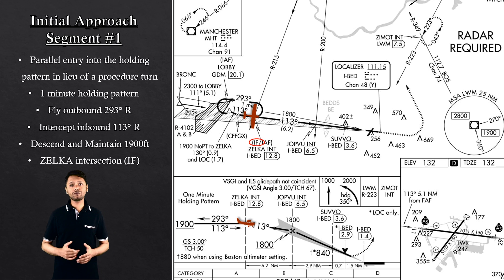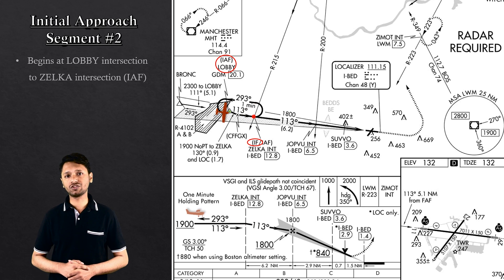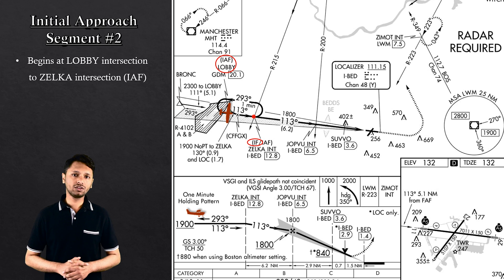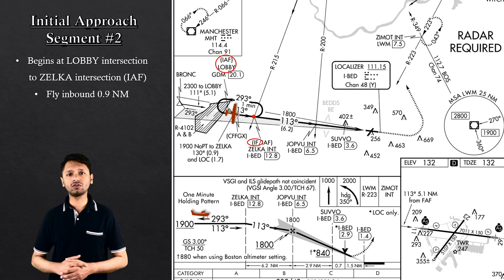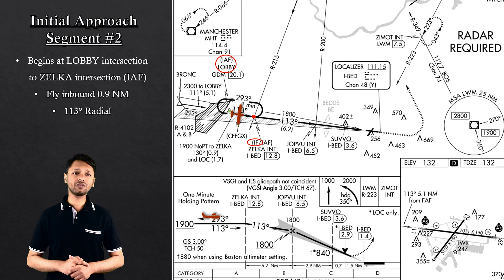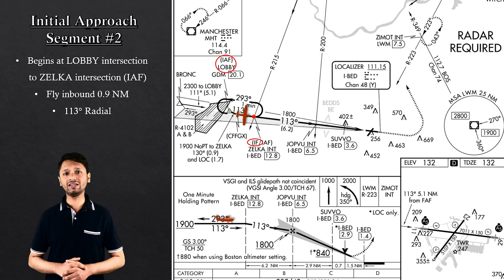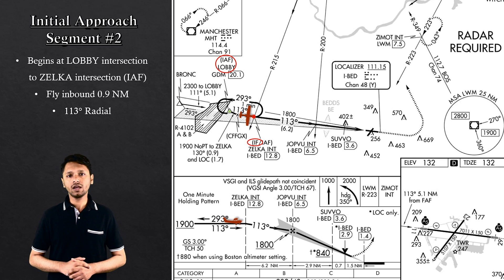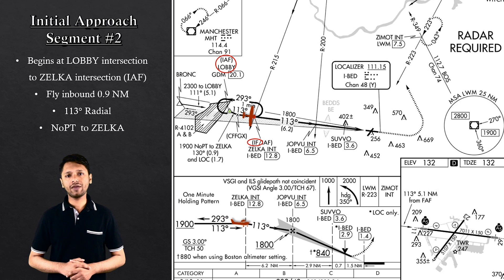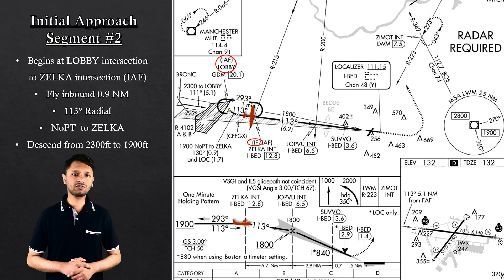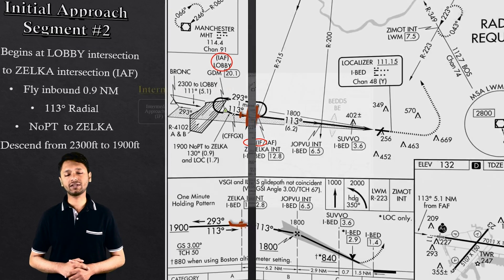Another option for the initial segment is to begin at Lobby intersection. The procedure is to fly inbound 0.9 nautical miles from Lobby on a 113 radial to ZELTA intersection, which is the intermediate approach fix. There is no procedure turn authorized for this approach, and the aircraft descends from 2,300 feet to 1,900 feet when reaching ZELTA.